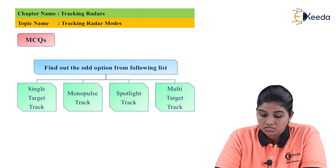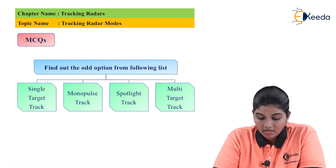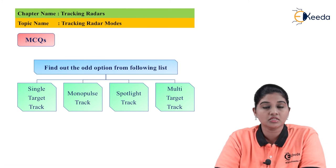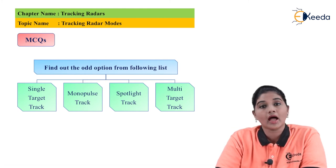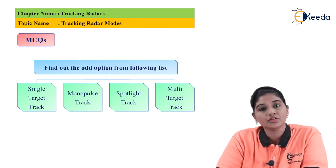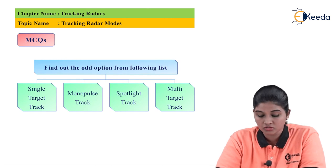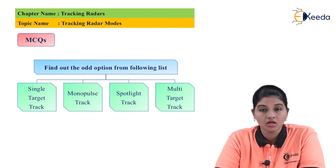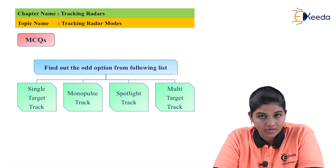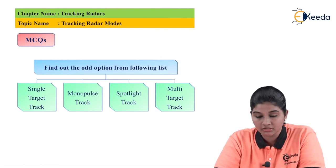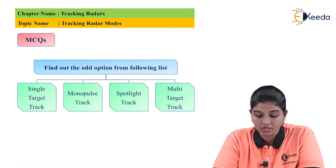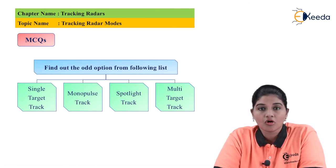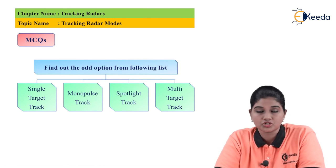The list includes single target track, monopulse track, spotlight track, and multi-target track. In this topic we are talking about the various modes of the tracking radar, which include single track, spotlight track, and multi-target track. Therefore the odd term is monopulse track — option B is the answer to this question.